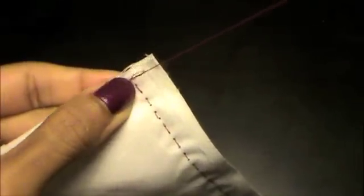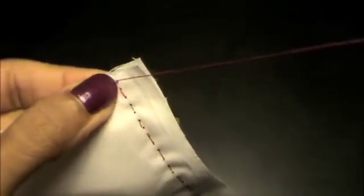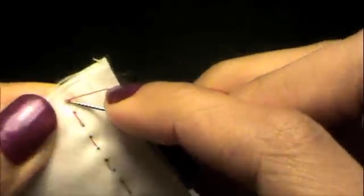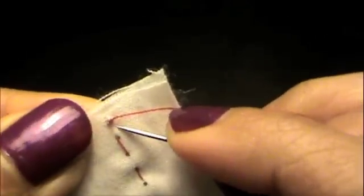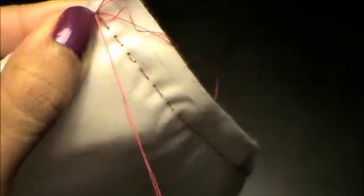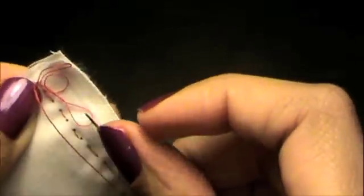You're going to repeat this step once more just to secure the knot. So just to show you a little closer, take a small bit of the fabric, pull but not all the way through, take the remaining loop, and feed the needle through.